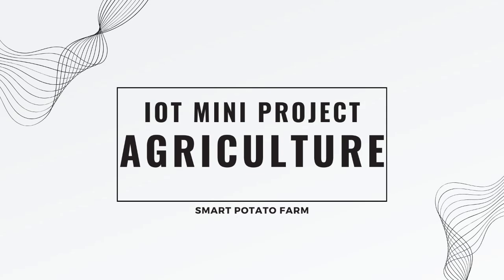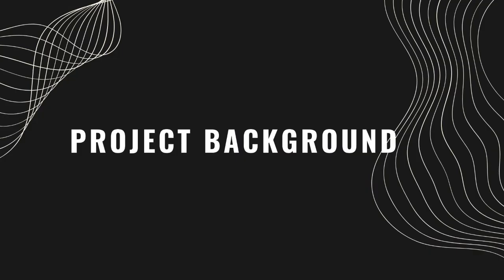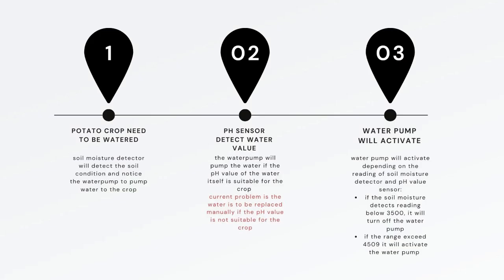Smart potato farm project background: potato crops need to be watered. A soil moisture detector will detect the soil condition and signal the water pump to pump water to the crop. A pH sensor detects the water value, and the water pump will activate if the pH value of the water is suitable for the potato, depending on the readings of both the soil moisture detector and pH sensor.